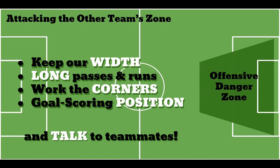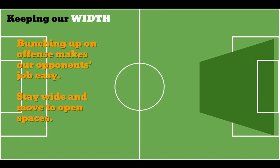If you remember our defensive strategy video, we talked about the different concepts we want to follow — there are four words we follow on defense. The four words we follow on offense are: width, long, corners, and position. We want our players to use these words as they're yelling out instructions and encouragement to each other. Let's talk about what these four concepts are and take a look at how they come into play in the course of a game.